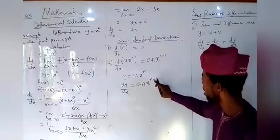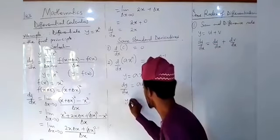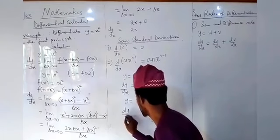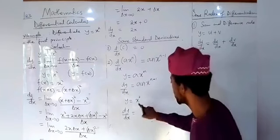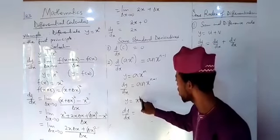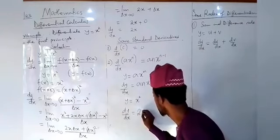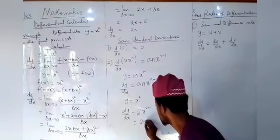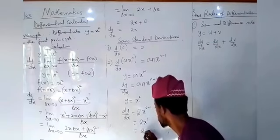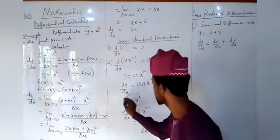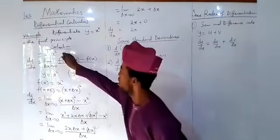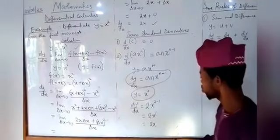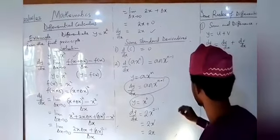You do two things: first multiply the power and the coefficient, then subtract one from the power. For instance, with y equals x squared, the coefficient is one and the power is two. So the power times the coefficient gives two times one equals two, then x raised to power two minus one — subtract one from the power — giving 2x raised to power one, which is the same as 2x. You can see this matches what we found using the first principle — both give 2x.